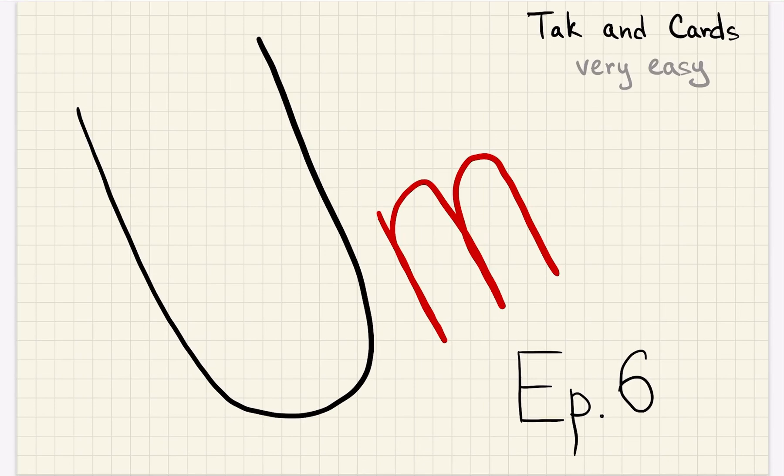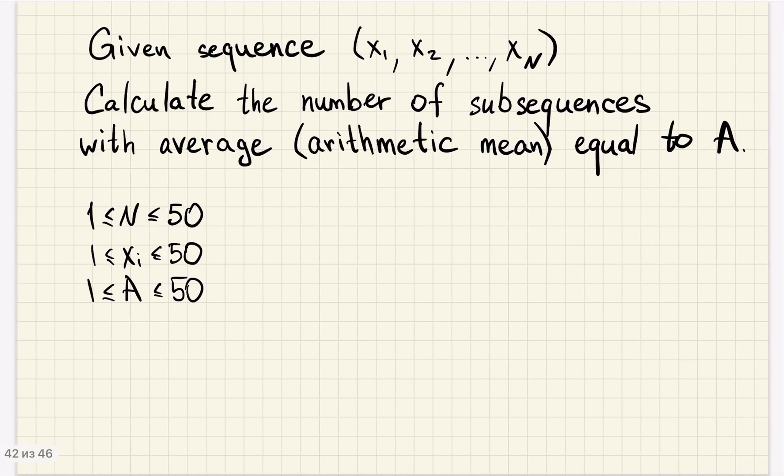Episode 6, Tag and Cards. Let's recap the problem statement. We are given a sequence of integers. We are asked to calculate the number of subsequences of the given sequence with average equal to given number A, and average here is arithmetic mean. All numbers are up to 50.